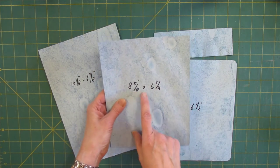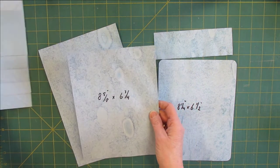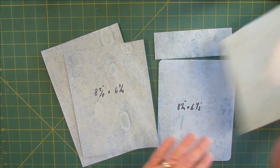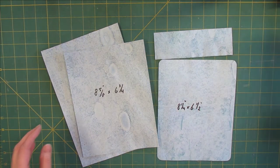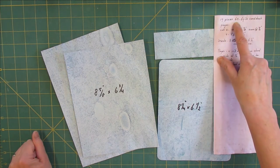Now we're going to need 17 pieces of cardstock, about 65 to 67 pounds is good enough.